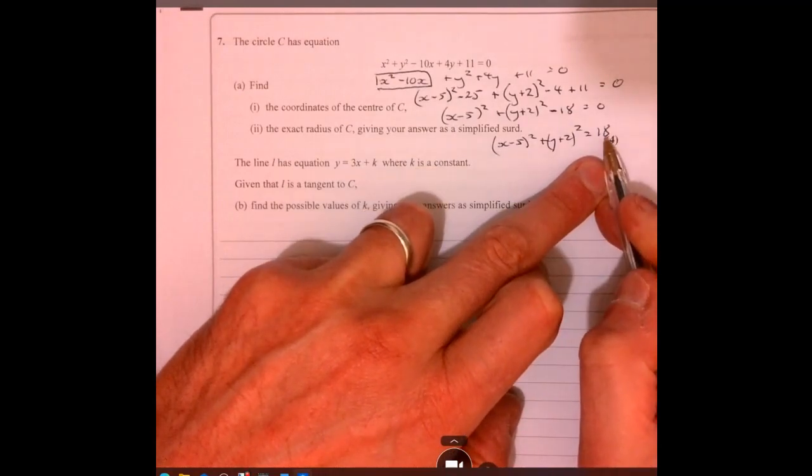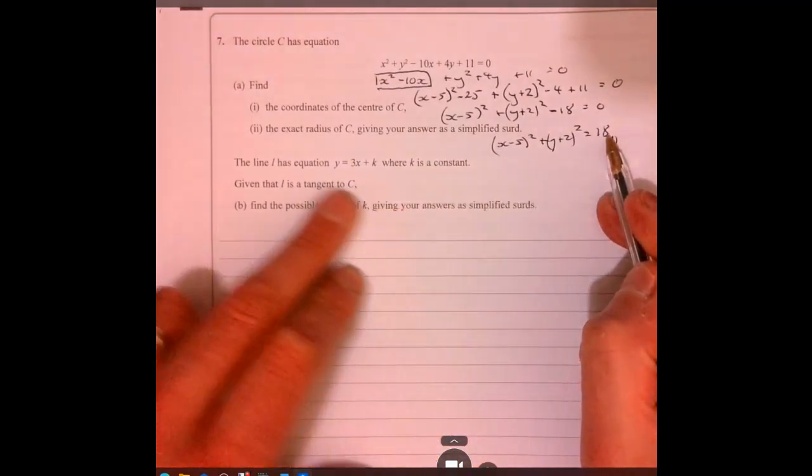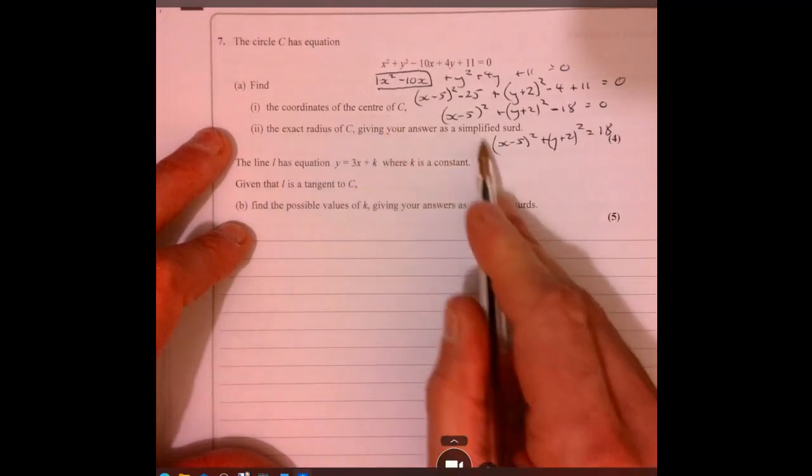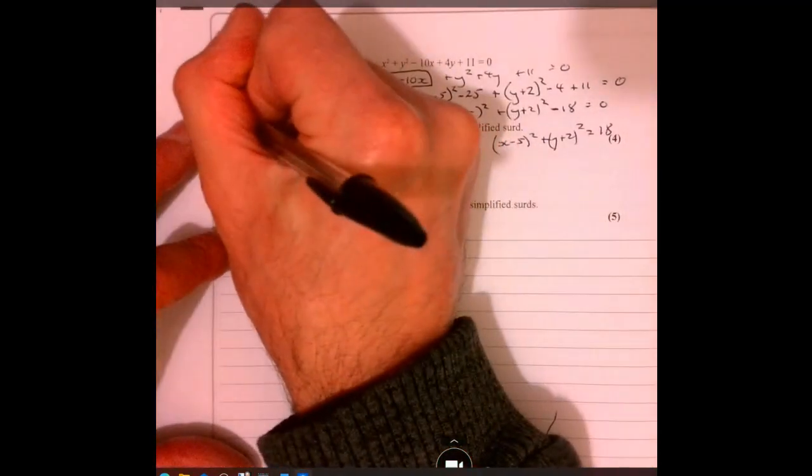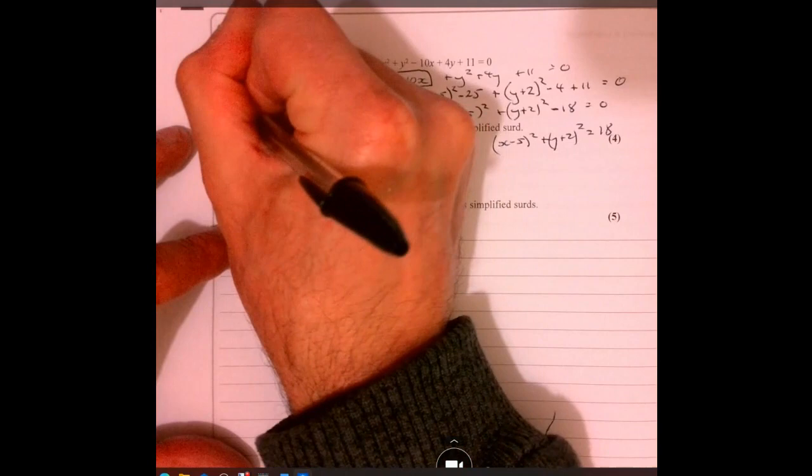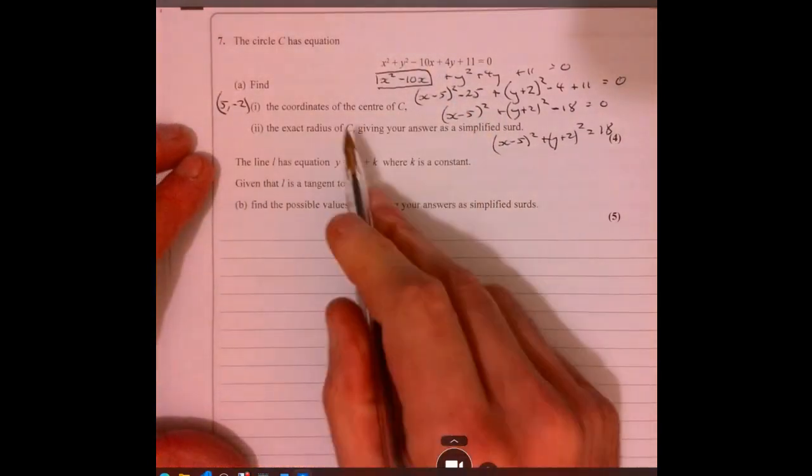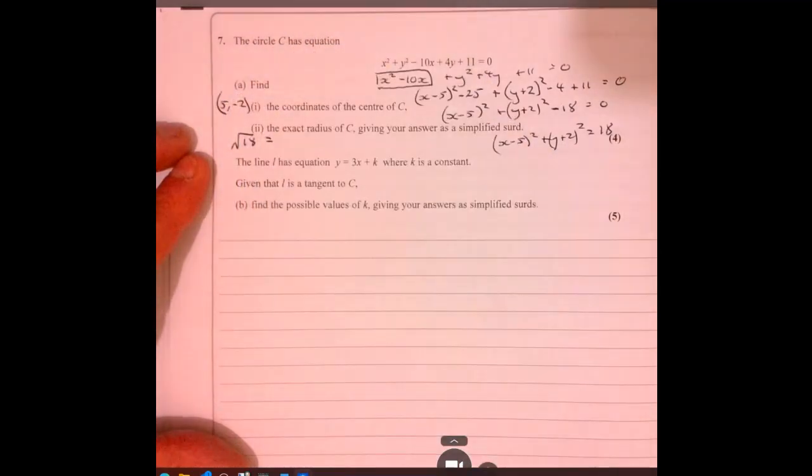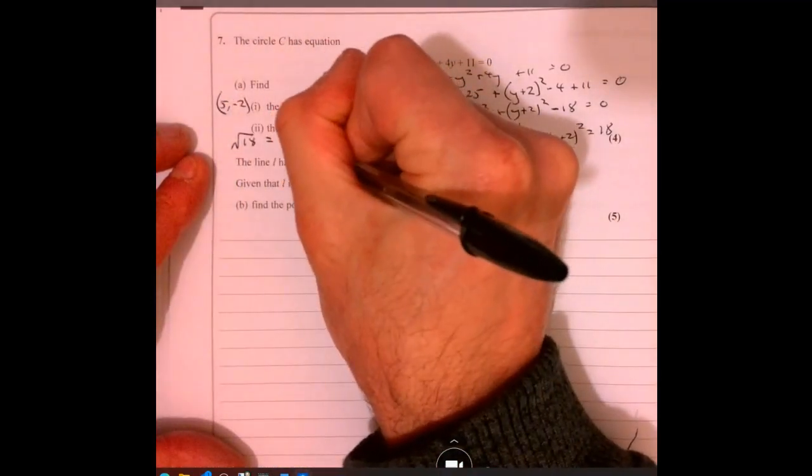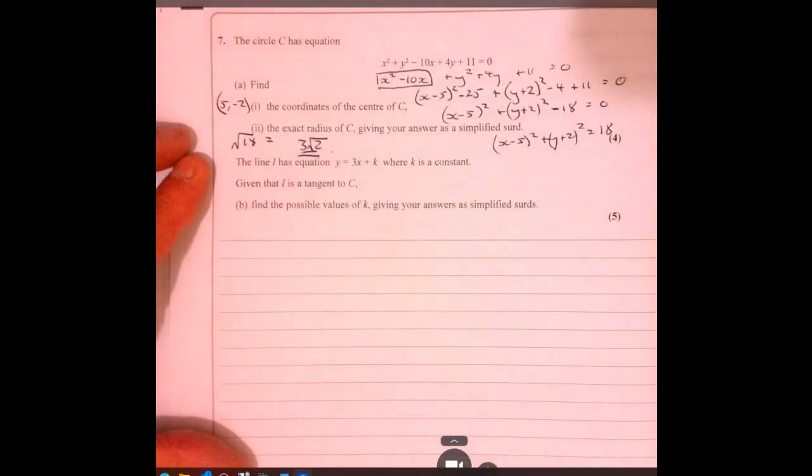So remember the radius squared is 18, so if I want to work out the coordinates of the centre are 5 minus 2, so 5 minus 2, and then this is root 18, and root 18 is 3 root 2.